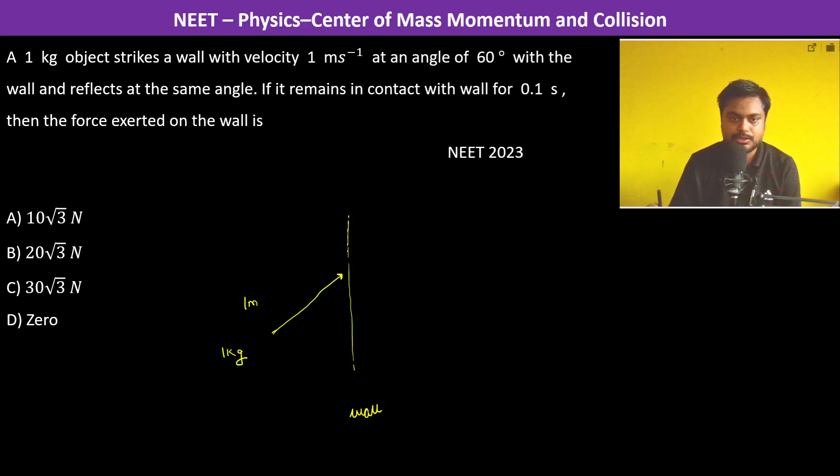With 1 meter per second, this makes an angle of 60 degrees with the wall and it gets reflected back. So this is 30 degrees and this also will be 30 degrees, reflects back at the same angle if it remains